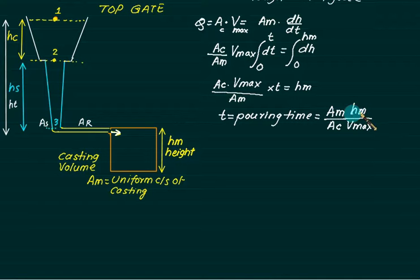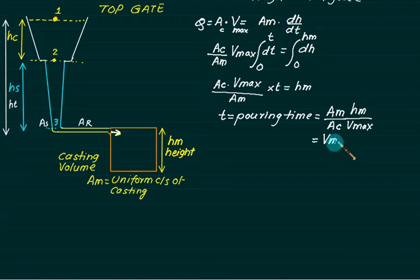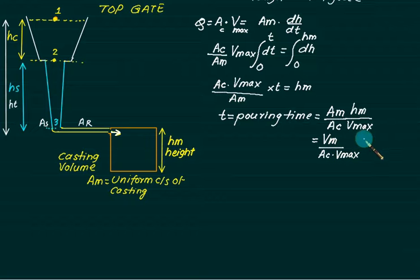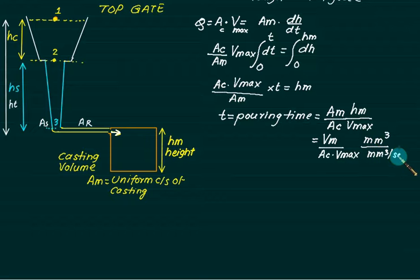HM is the height of the mould. AM × HM is also called as volume of casting Vm, so pouring time equals Vm divided by choke area multiplied by V_max. If volume is given directly, substitute for volume. Take volume in mm³ and choke area in mm²/second, so your answer will come in seconds.